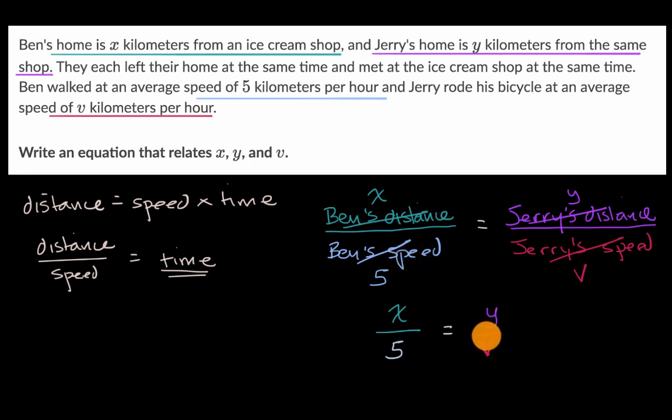If they did that, then we would have a different given and maybe a different variable, but the structure of our equation would be the same, that Ben's distance divided by Ben's speed would need to be equal to Jerry's distance divided by Jerry's speed.